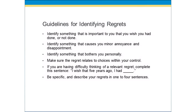Let's look at some guidelines for identifying what our regrets are. We would identify something that's important to you that you wish you had done or had not done. This might be where you identify something that causes you minor annoyance and disappointment. Regrets could be identifying something that bothers you personally. You should make sure that the regret relates to choices within your control — if it's something outside of your control, let it go. If you're having difficulty thinking of a relevant regret, complete the sentence: 'I wish that five years ago I had...' That will help you identify what a regret is in your life. Again, this regret is not necessarily negative — it's just a missed opportunity. Try to be as specific as possible and describe your regrets in a few sentences. By doing that, you can identify what you wish you had done and set your sights on fulfilling that potential and eliminating the regret from your past.